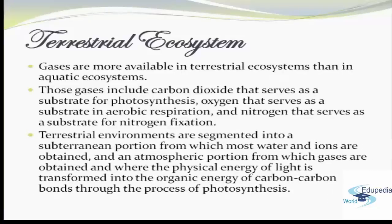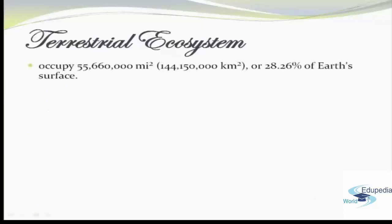Terrestrial environments are segmented into a subterranean portion, from which most water and ions are obtained, and an atmospheric portion, from which gases are obtained and where the physical energy of light is transformed into the organic energy of carbon-carbon bonds through the process of photosynthesis. This kind of ecosystem occupies 55,660,000 km², or 144,150,000 — about 28.26% of Earth's surface.